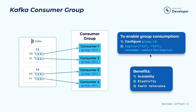Once you start the consumer group, the load will be evenly divided among those instances of the members in the group. And if a new member joins or an existing member leaves, the load can be rebalanced among the remaining members.